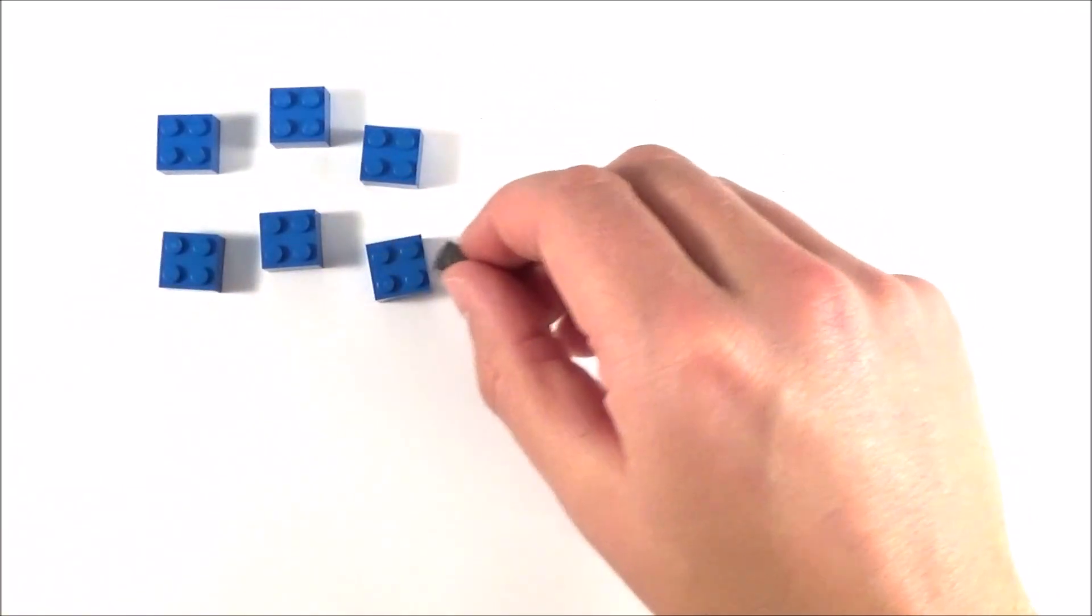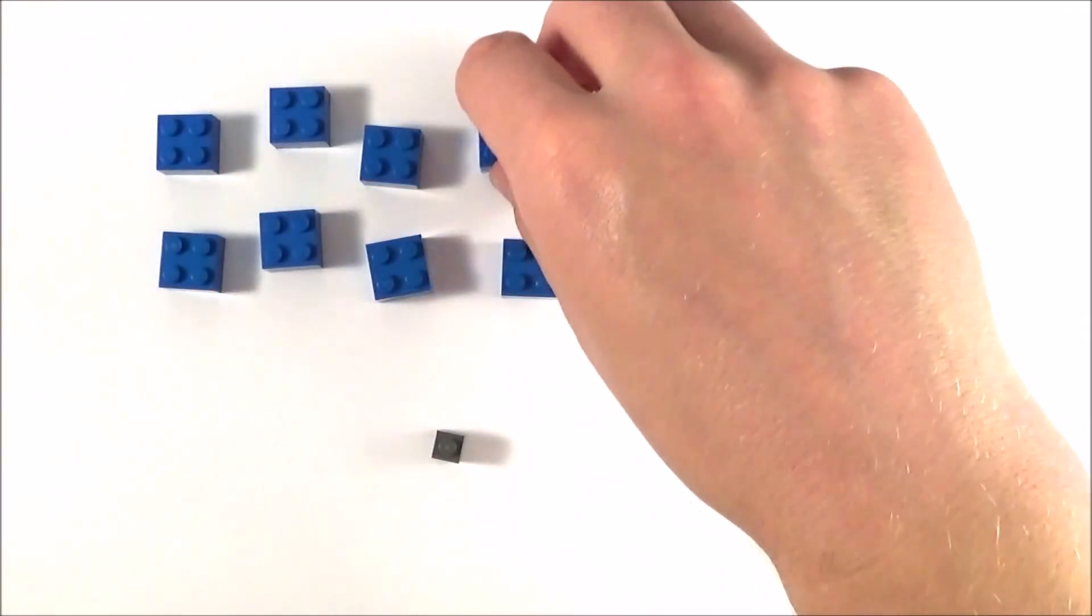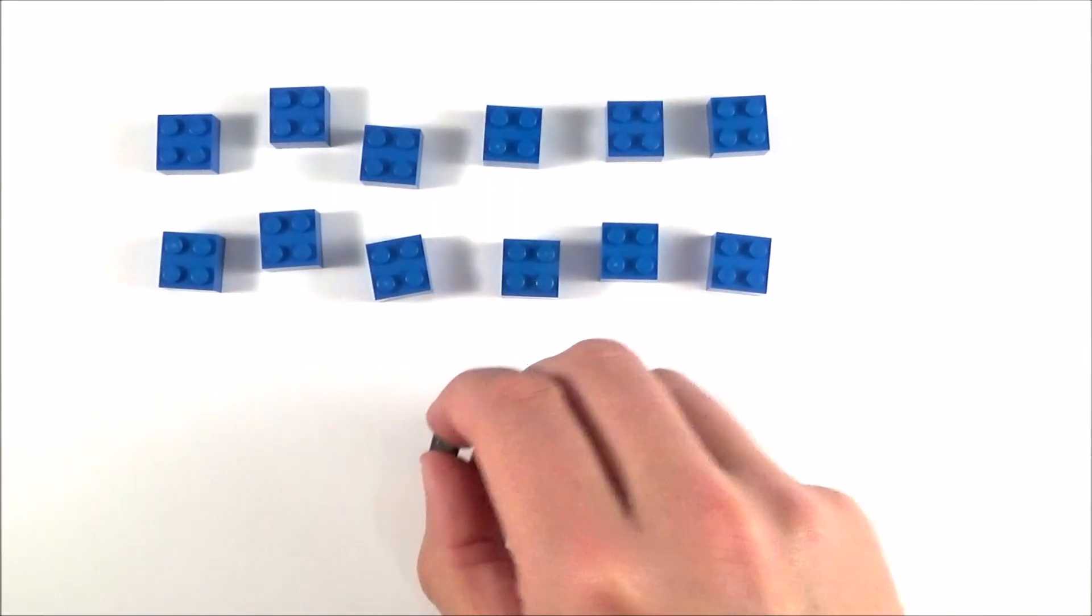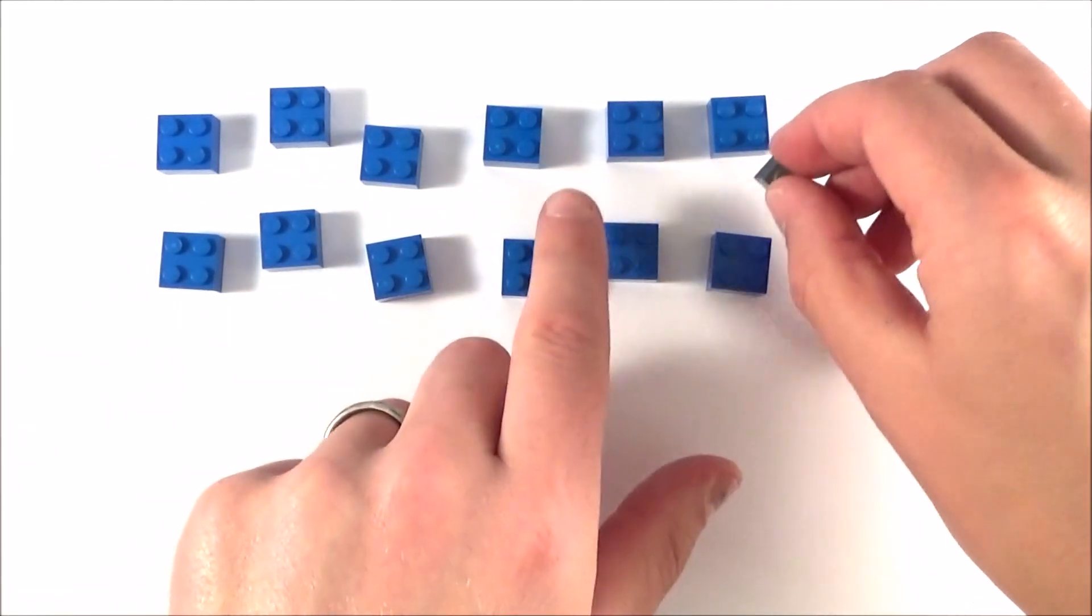Now perhaps this conductor isn't this length but maybe is twice as long. If that same charge carrier had to move through twice the length, there's going to be twice as many things for it to get past.